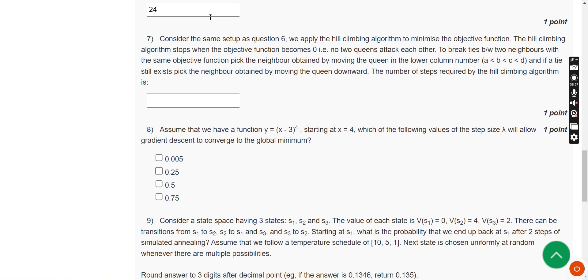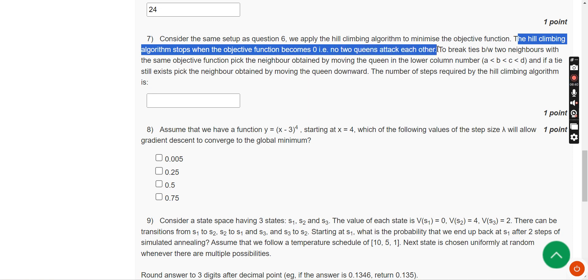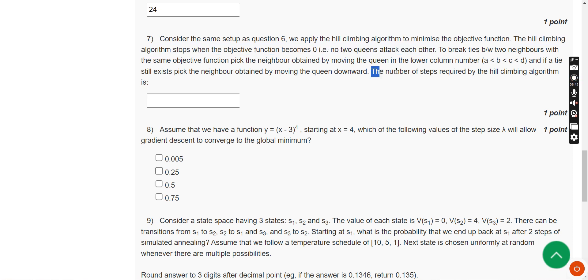Moving on to the seventh question. Consider the same setup as question number 6. We apply the hill climbing algorithm to minimize the objective function. The hill climbing algorithm stops when the objective function becomes zero, that means no two queens attack each other. The number of steps required by the hill climbing algorithm is—for the seventh question the answer is 2. I have got the answer as 2.